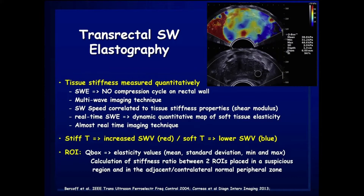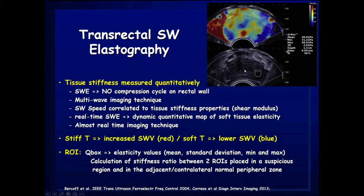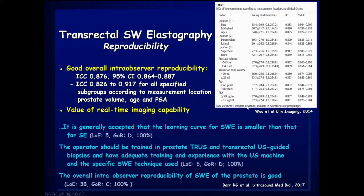Transrectal shear wave elastography relies on no compression on the rectal wall — this is a very key point. It is a multi-wave technique where shear wave speed is displayed as a color map covering the prostate. With real-time shear wave elastography, you get a dynamic quantitative map of soft tissue stiffness. Stiffer areas are coded in red, softer tissues in blue. You can obtain true measurements of local elasticity by placing a region of interest called a Q-box.